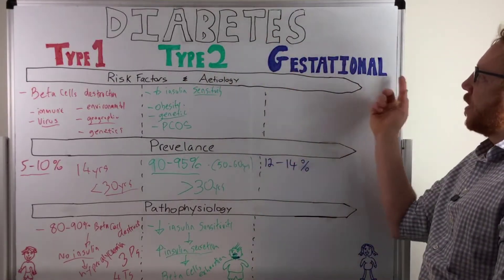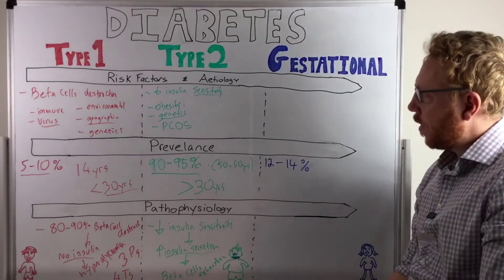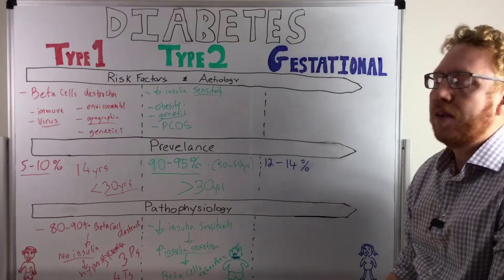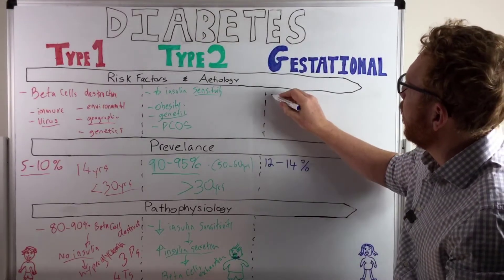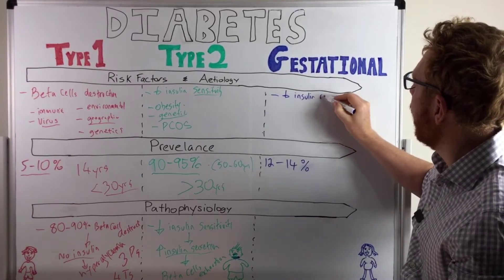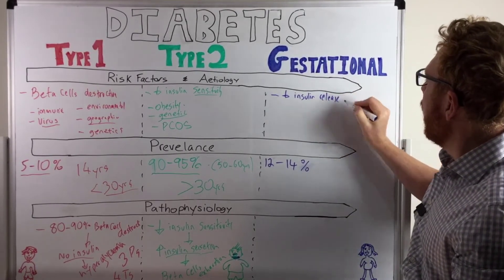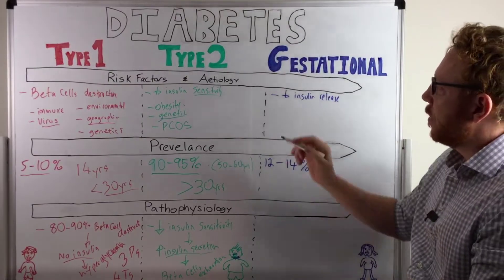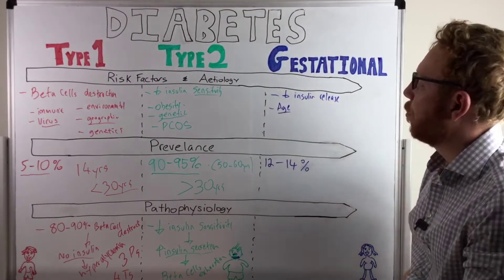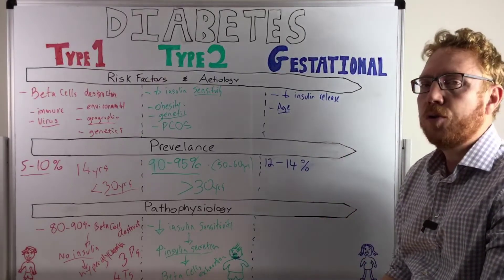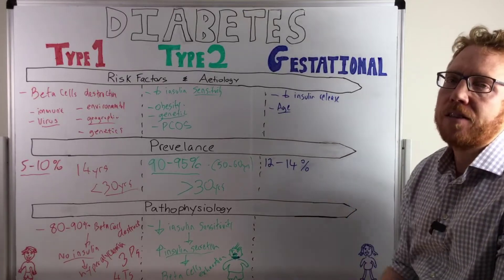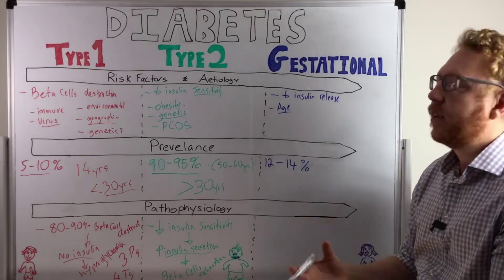Now moving lastly to gestational diabetes. So what this one is more to do with is obviously pregnancy. So pregnancy is the important factor here. But it's more of a reduction in insulin release. Now the risk factors that go with this is age. So the older the female in the pregnancy, the higher the risk. Usually that's to do with the beta cells are less reactive to the high amounts of glucose during the pregnancy, which we'll get to.